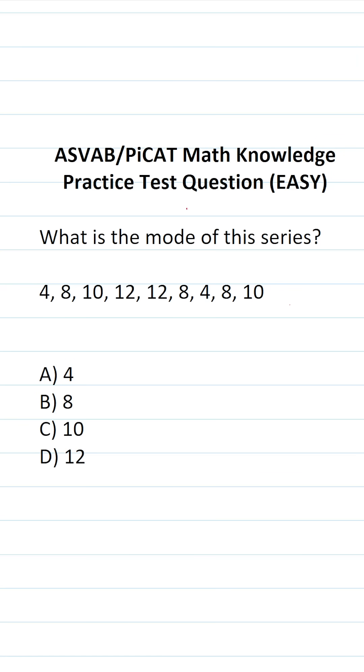Mode means the number that appears the most often. The easiest way to determine the mode of these numbers is to rearrange them from least to greatest. Let's start with 4.